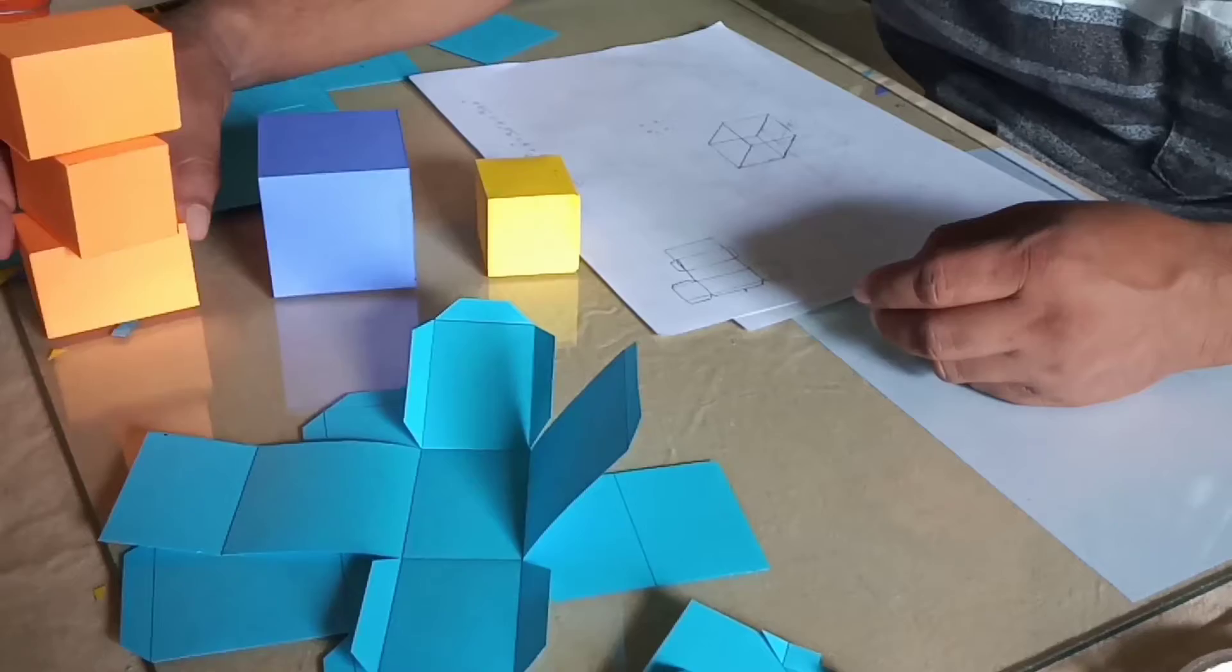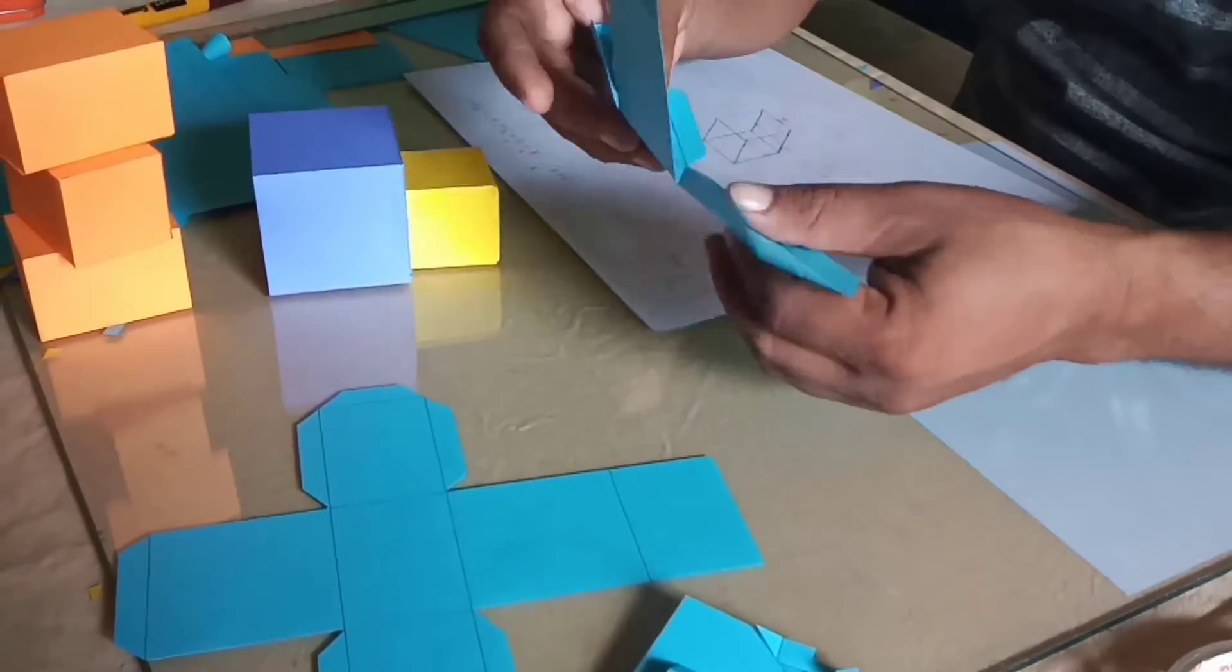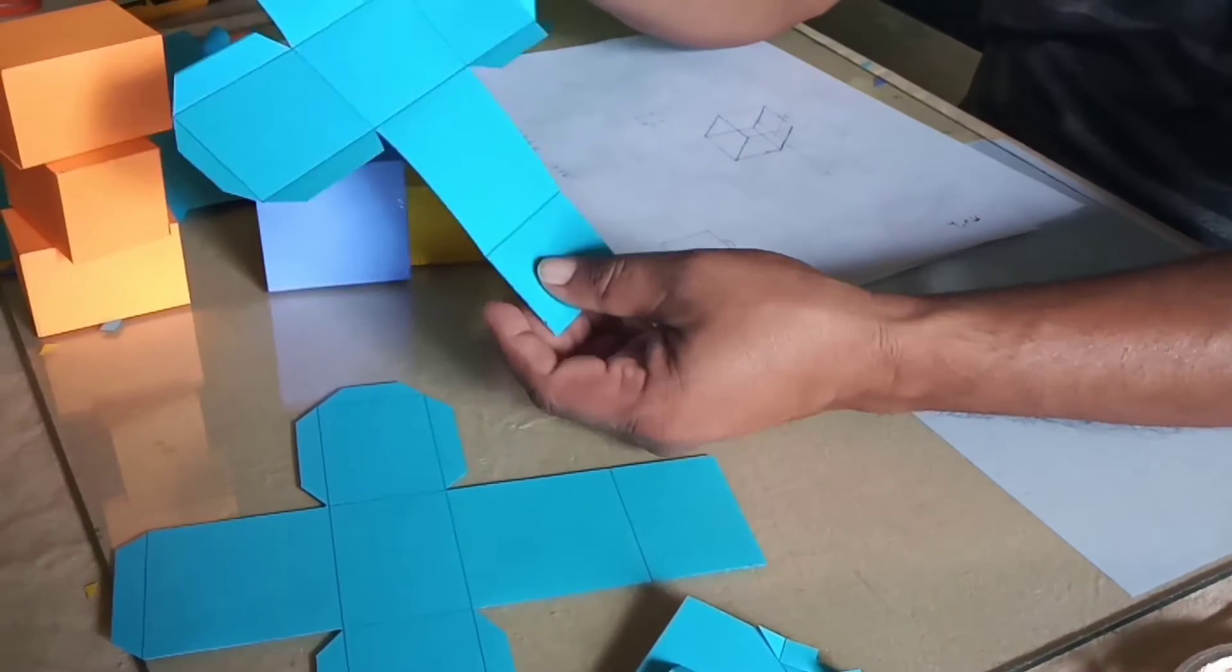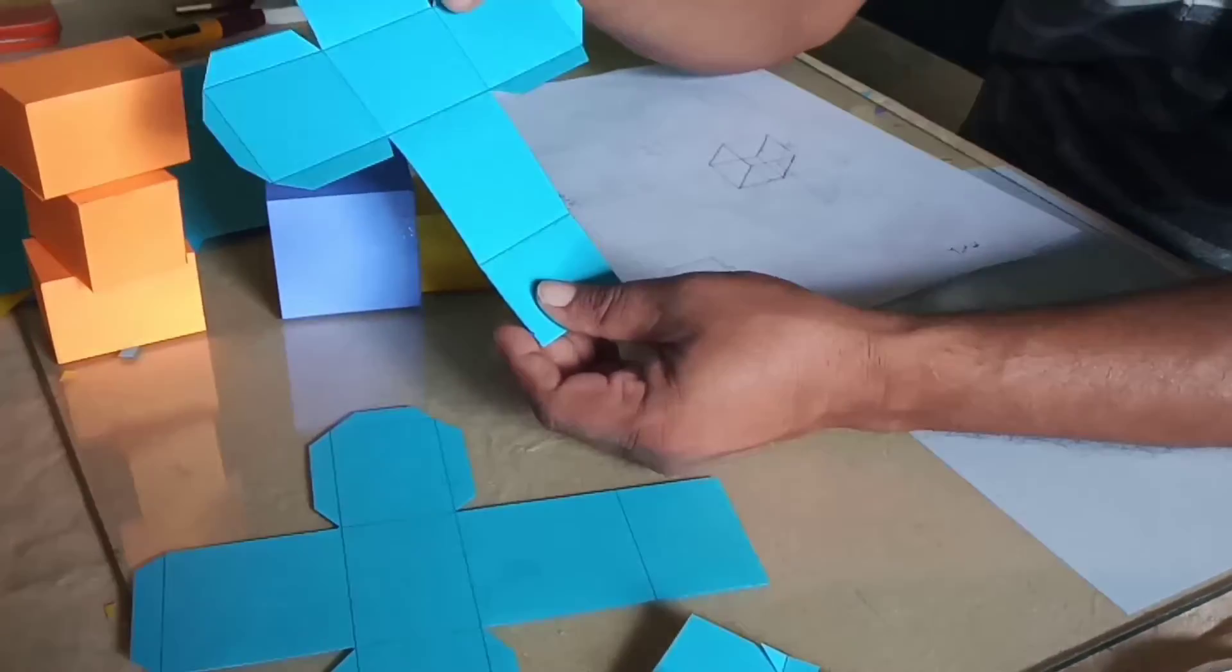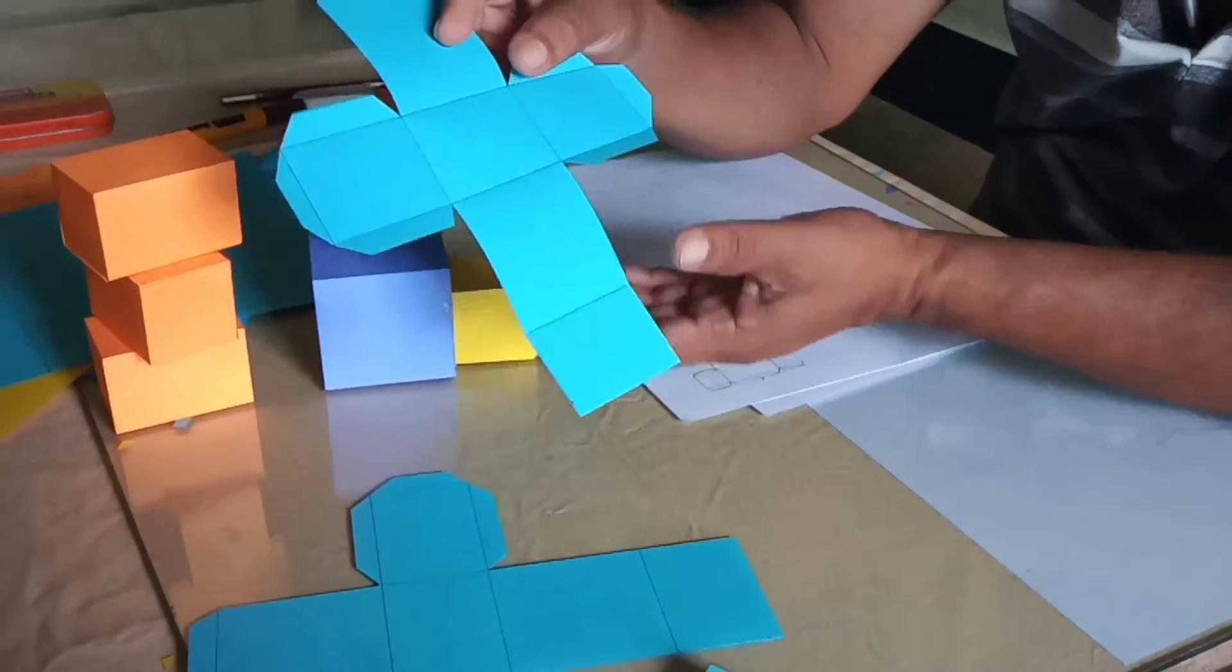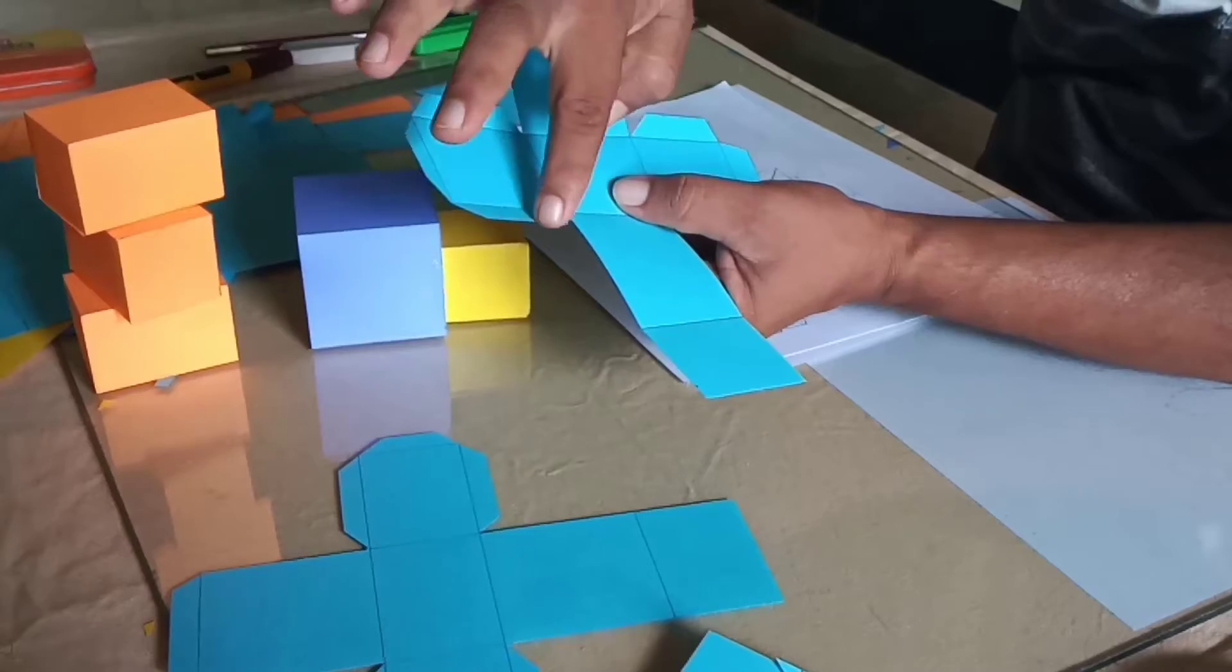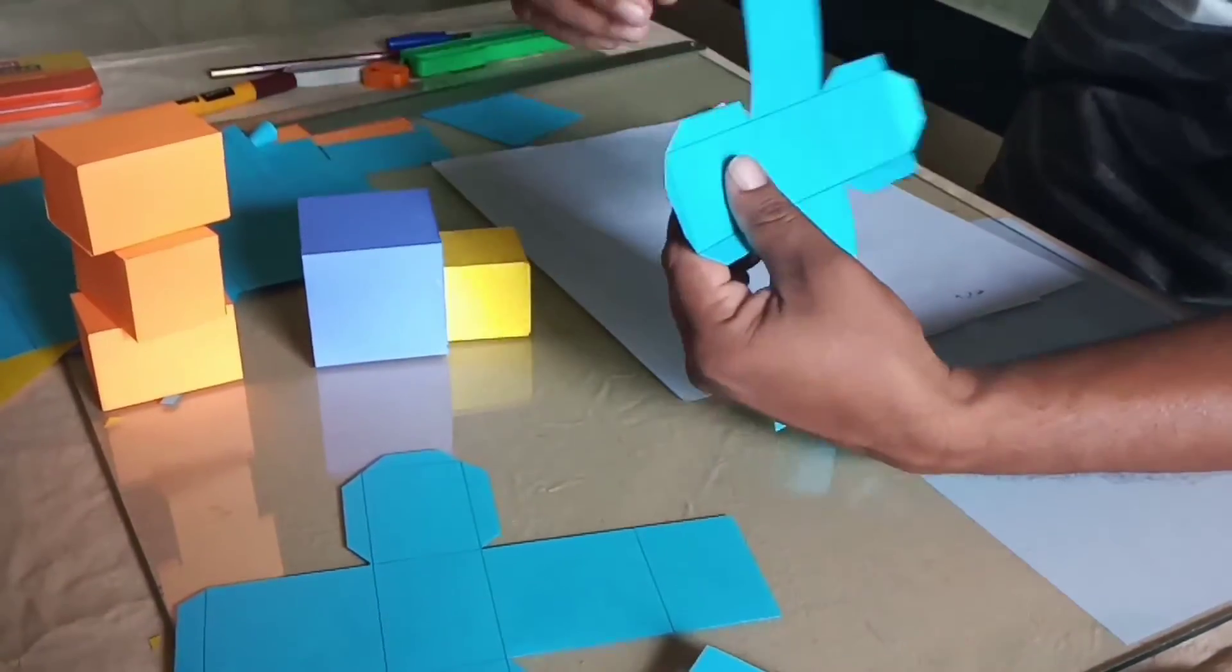I'll show you how we make the cuboids. We prepare a network which is like this. It has six faces, right? And to attach the sides we have these tabs. We apply glue over here.